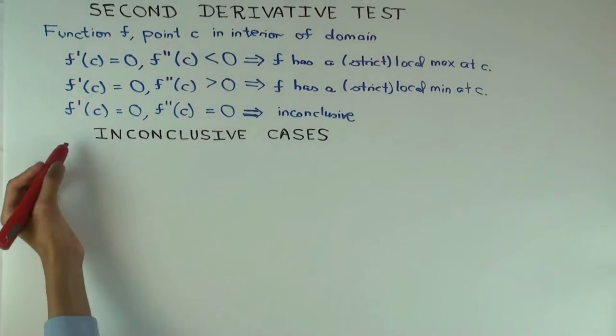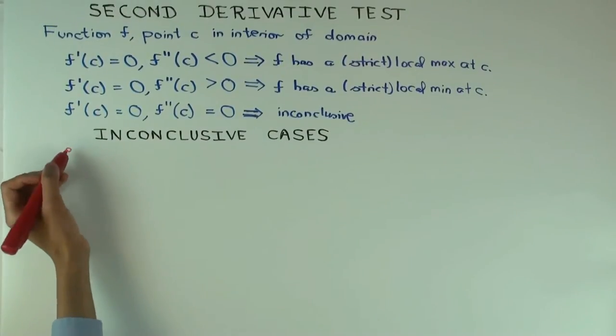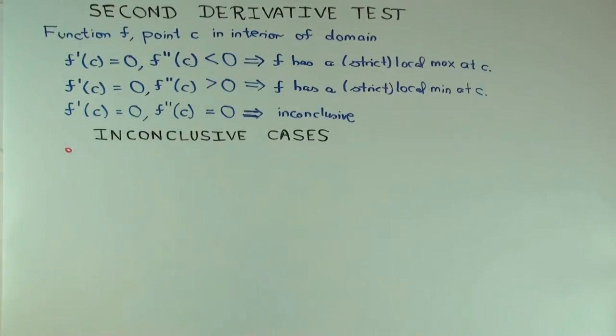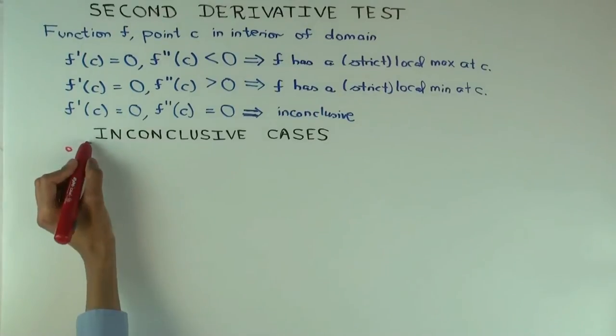Okay, so the first inconclusive case is where you have the other type of critical point. What's the other type of critical point? Doesn't exist. Doesn't exist. That's one problem situation.